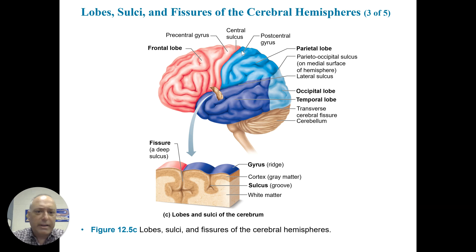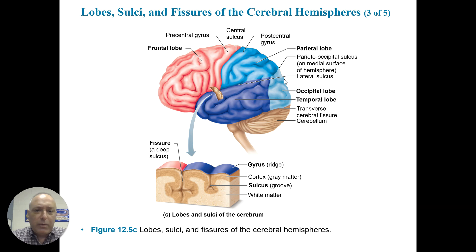The frontal lobe is separated from the parietal lobe by the central sulcus. Adjacent to the central sulcus, we have the precentral gyrus, which is part of the frontal lobe, and the postcentral gyrus, which is part of the parietal lobe. There's also a parieto-occipital sulcus which divides the parietal and occipital lobes. This slice shows the deep fissures and the gyrus of the ridge, with gray matter on the surface and white matter projections deep.